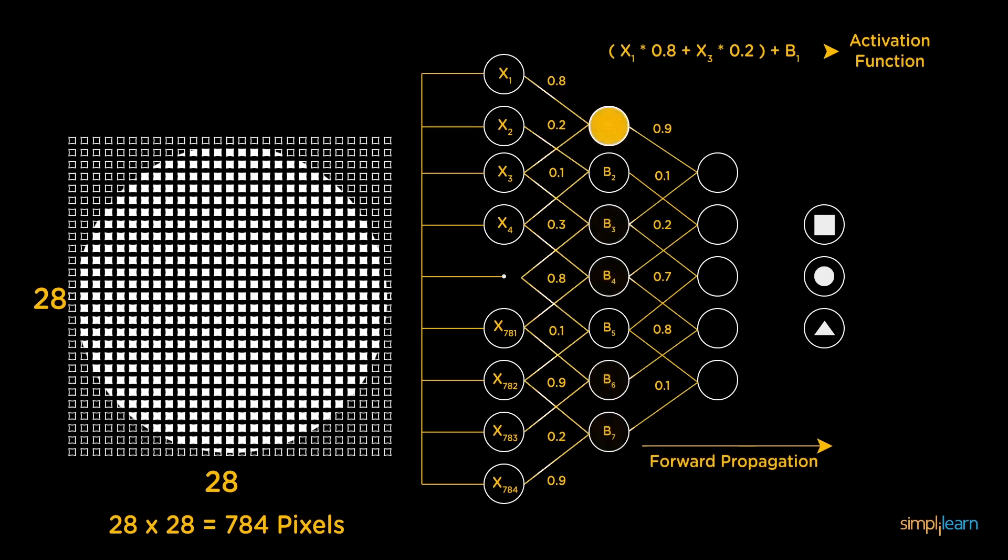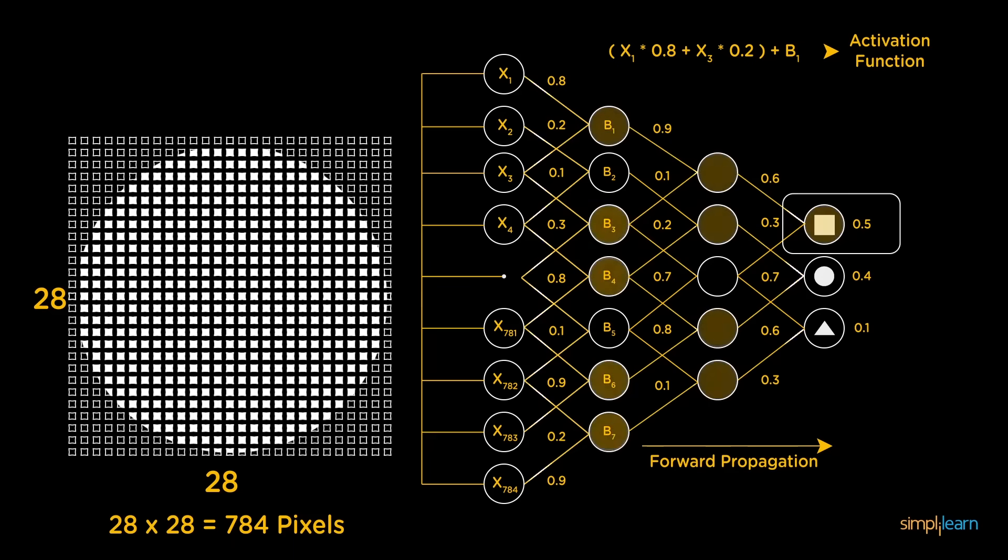In the output layer, the neuron with the highest value fires and determines the output. The values are basically a probability. For example, here, our neuron associated with square has the highest probability. Hence, that's the output predicted by the neural network.